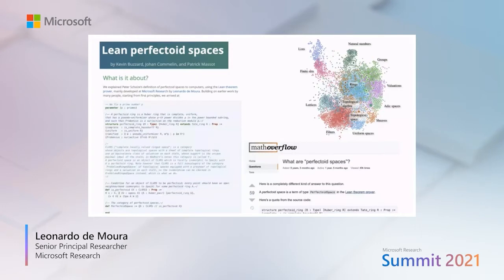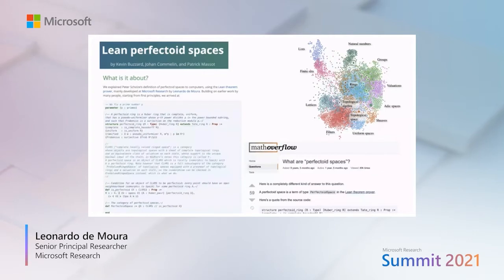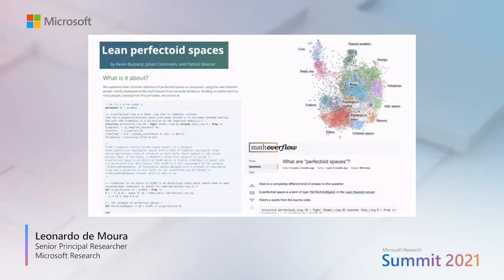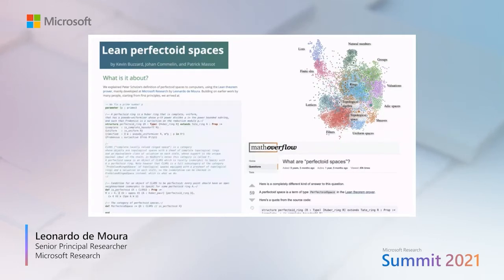You can navigate through these objects using Visual Studio Code. For example, if you don't know what a Tate ring is, you can just click on this object and ask Visual Studio Code to jump to its definition. By having these objects formalized in Lean, we can also use this data to create visualizations automatically. The graph on the right-hand side was generated automatically by a program written in Lean by Patrick Massot, showing all the dependencies of this project. If you go to the MathOverflow website, used by mathematicians for asking questions, you're going to find a question about perfectoid spaces, and one of the most popular answers is a link to this Lean development.